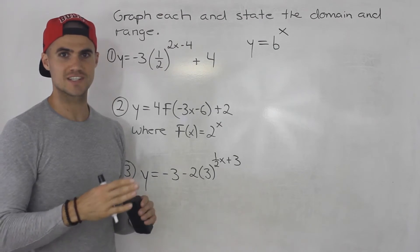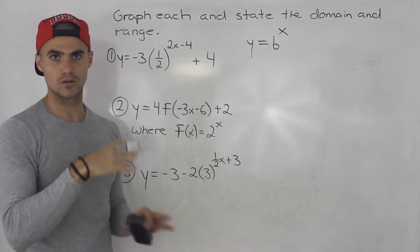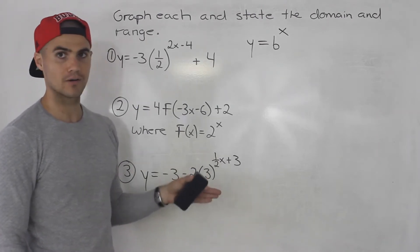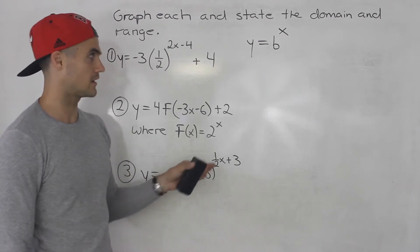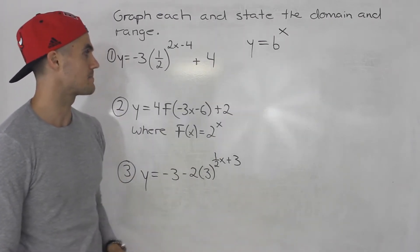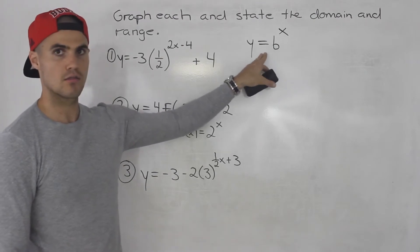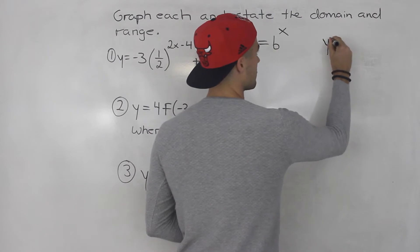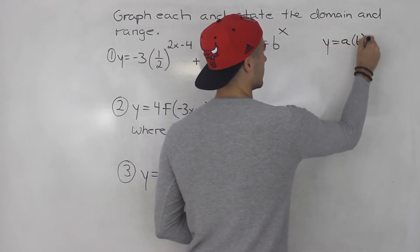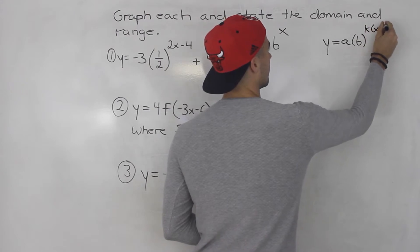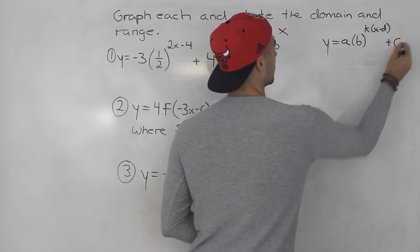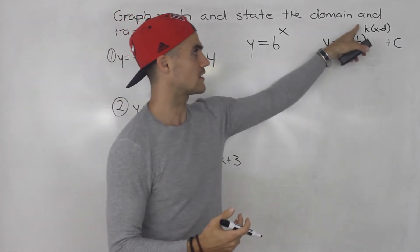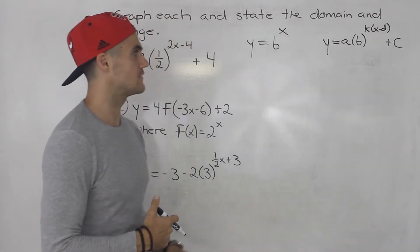With exponential functions, the parent table can change depending on what the base is. What we're going to do is take this parent function and then transform it. The general transformation format gives you your transformation values: the a value, the k value, the d value, and the c value.